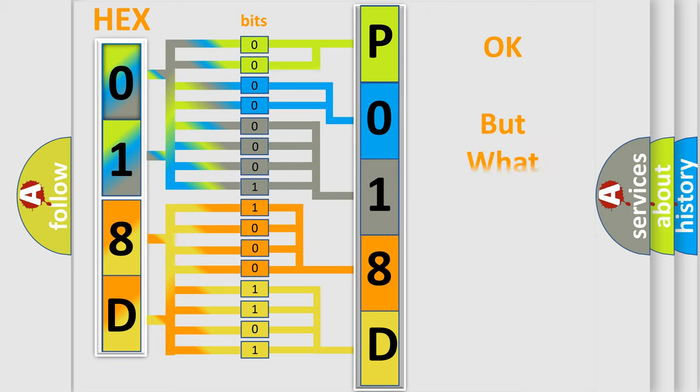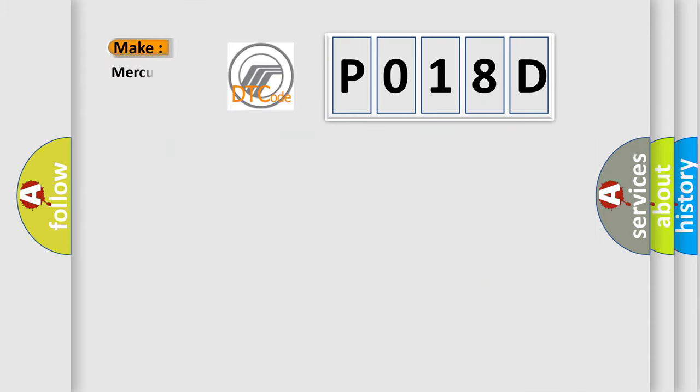We now know in what way the diagnostic tool translates the received information into a more comprehensible format. The number itself does not make sense to us if we cannot assign information about what it actually expresses. So, what does the Diagnostic Trouble Code P018D interpret specifically?